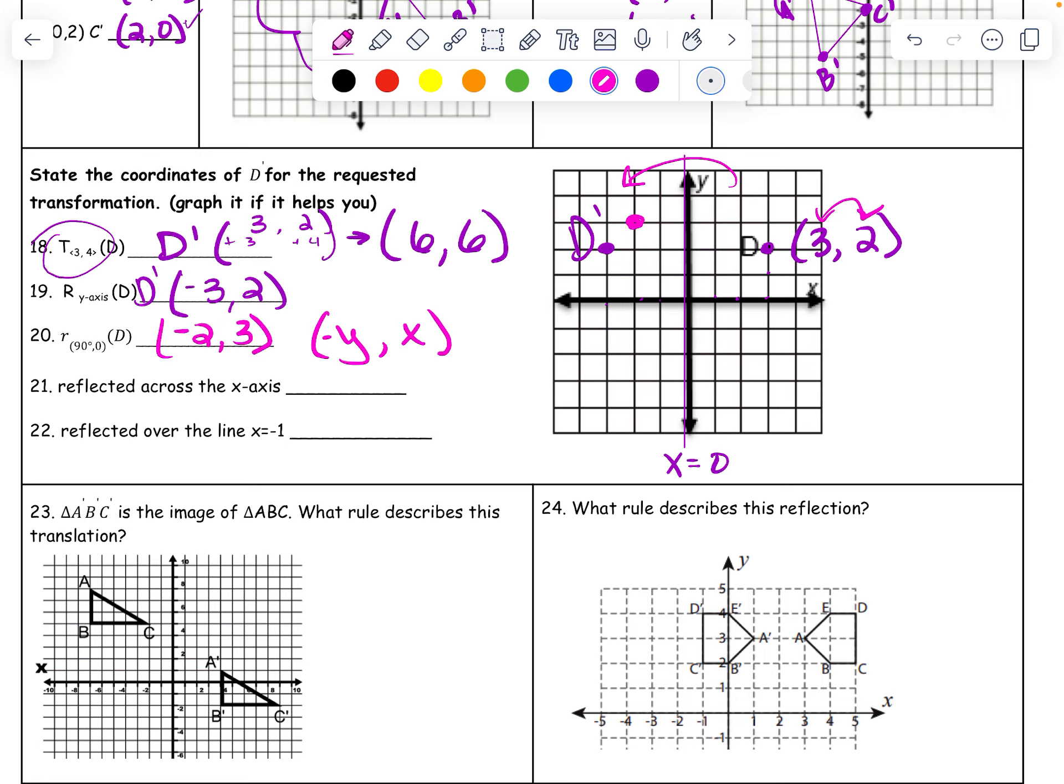Negative 2, 3, D prime. You can also double check. If you go to the origin and then go to D, that's a 90-degree angle. We just rotated 90. We're good to go. Looking good.